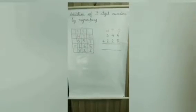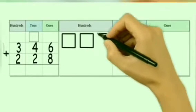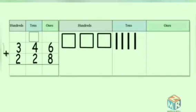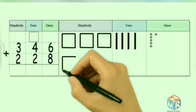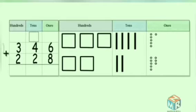Let's take one more example. Adding three digit numbers by regrouping. Let's add 346 and 228. 346 has three hundredths, four tenths and six ones. 228 has two hundredths, two tenths and eight ones.